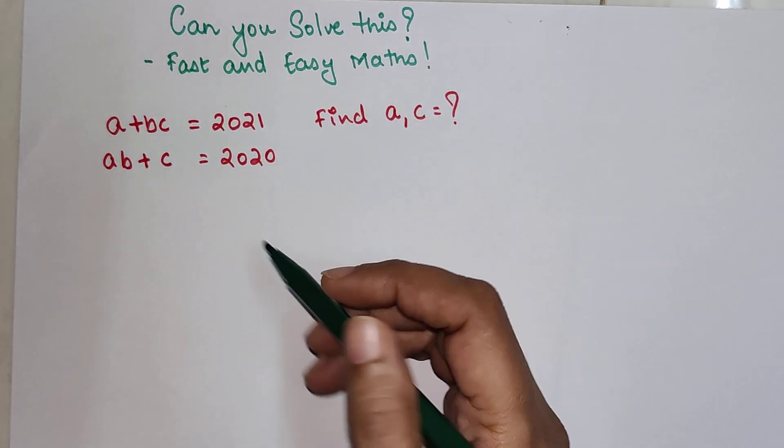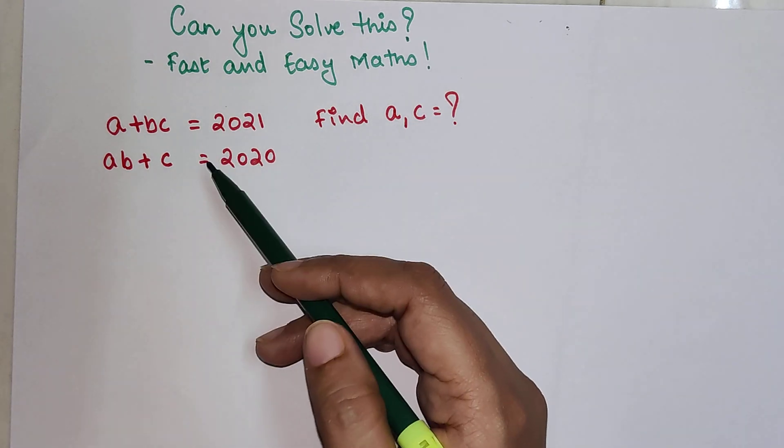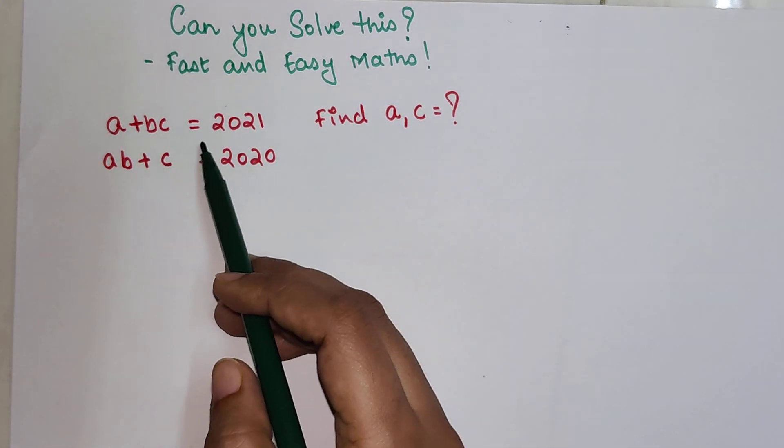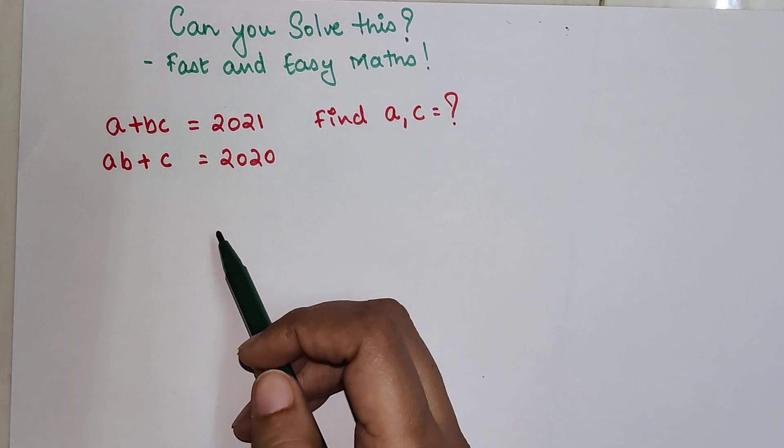So students this is an important question where we have to find the value of A and C and the two equations given are A plus BC equals 2021 and AB plus C equals 2020.